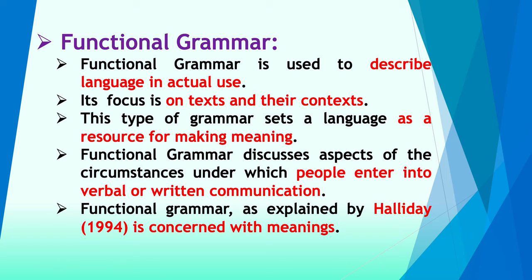Point number three: this type of grammar sees language as a resource for making meaning. It looks at language from the perspective of meaning. If somebody has written a paragraph, you may talk about it grammatically in a traditional manner — looking at words and phrases — that is the formal way of looking at the text.